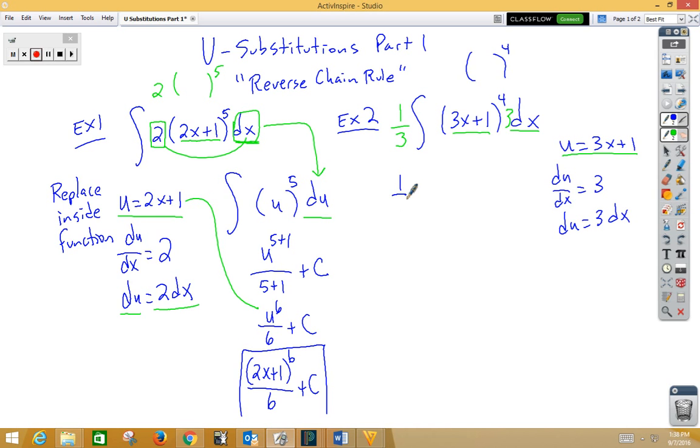I now have one third integral u to the fourth du. Reverse power rule would give me u to the fifth over five plus c. And I've got this one third out in front that I want to multiply by. So this gives me u to the fifth over fifteen plus c. But it's not really u, u is 3x plus 1. So we would replace that and go 3x plus 1 to the fifth power divided by fifteen plus c.